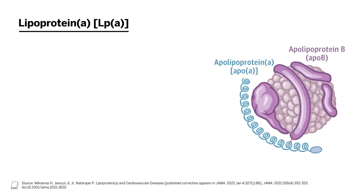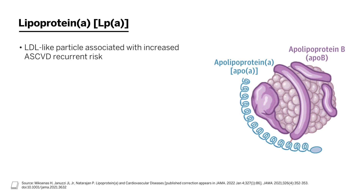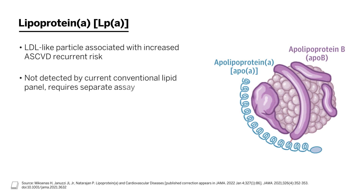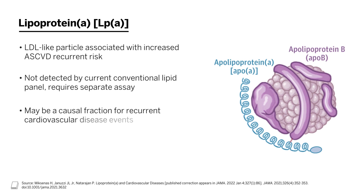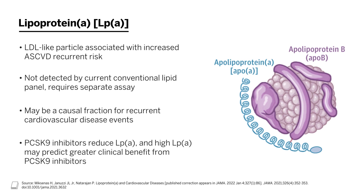Another important lipoprotein is lipoprotein(a), or LP(a) — an LDL-like particle associated with recurrent cardiovascular disease risk. It's not detected by the conventional lipid panel and requires a separate blood-based assay. An abundance of pre-clinical data suggests it may be a causal fraction for recurrent cardiovascular disease events. PCSK9 monoclonal antibodies happen to reduce LP(a), and individuals with high LP(a) may derive greater clinical benefit from PCSK9 inhibitors. However, these medicines are not currently approved to treat isolated elevated LP(a). If patients have insufficient LDL lowering and also have high LP(a), it may be a double benefit. Ongoing prospective randomized controlled trials are testing whether specifically lowering LP(a) will reduce recurrent cardiovascular disease risk.